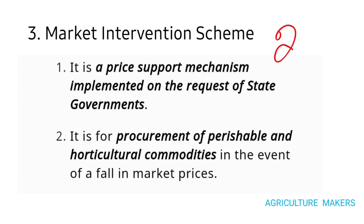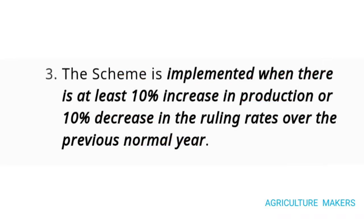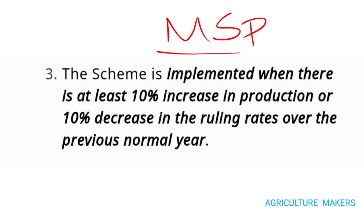We have already seen two central sector schemes in the previous video. This is the third one — the market intervention scheme. It is a price support mechanism implemented by the central government if the state government requests it, for the procurement of perishable and horticultural commodities in the event of fallen market prices. This scheme is an alternative to the minimum support price and covers commodities which don't come under the MSP.